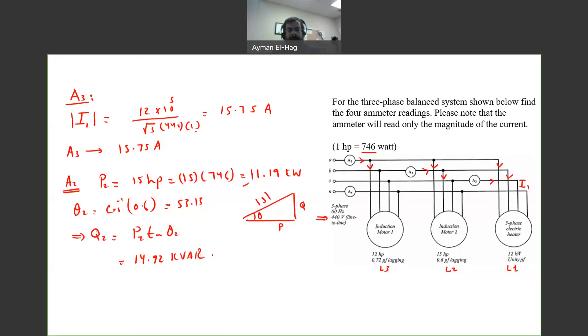Let's go back to the first load. We know P1, what will be Q1? Since the power factor is unity, Q1 is equal to zero. So now we know P1, P2, Q1, and Q2.